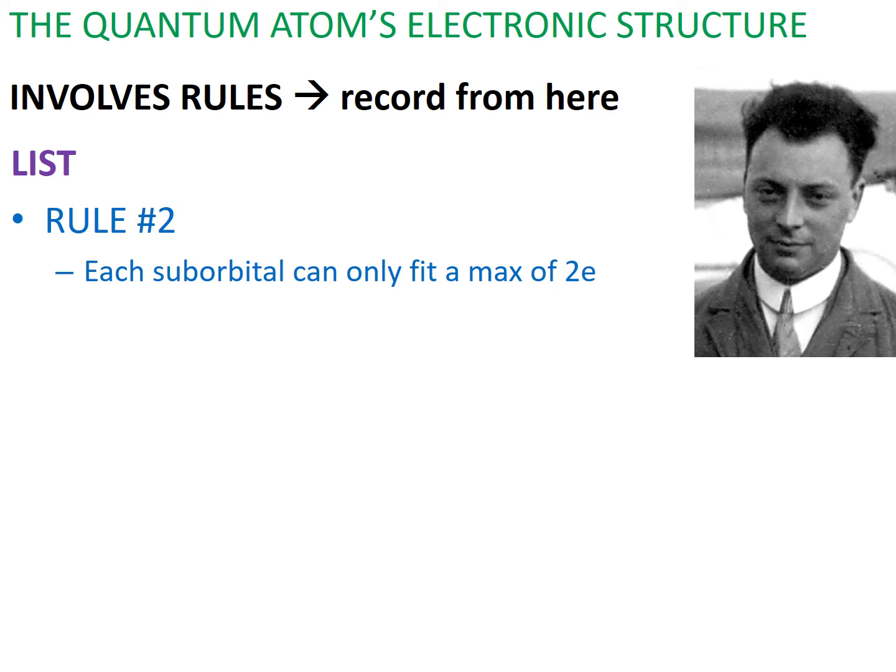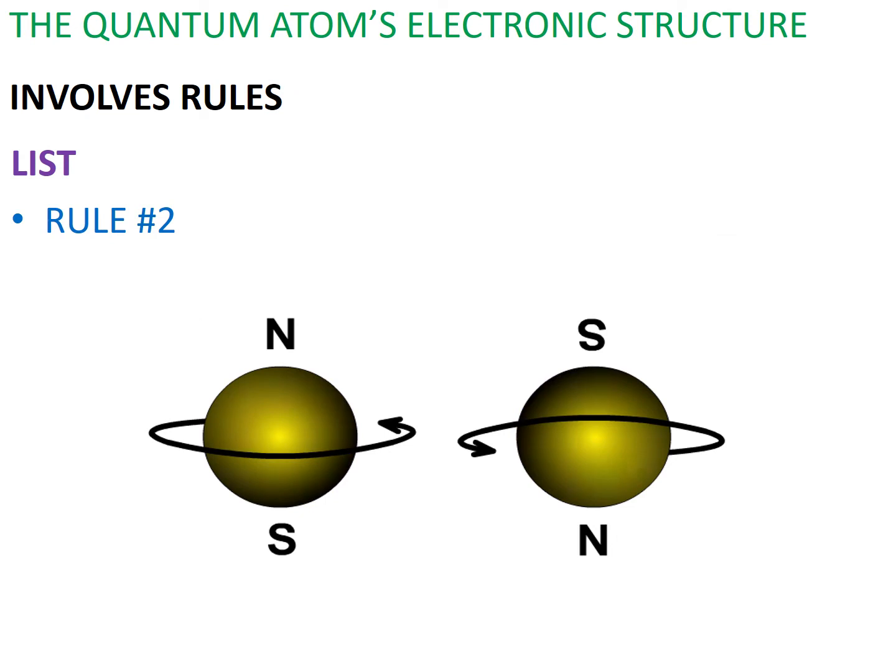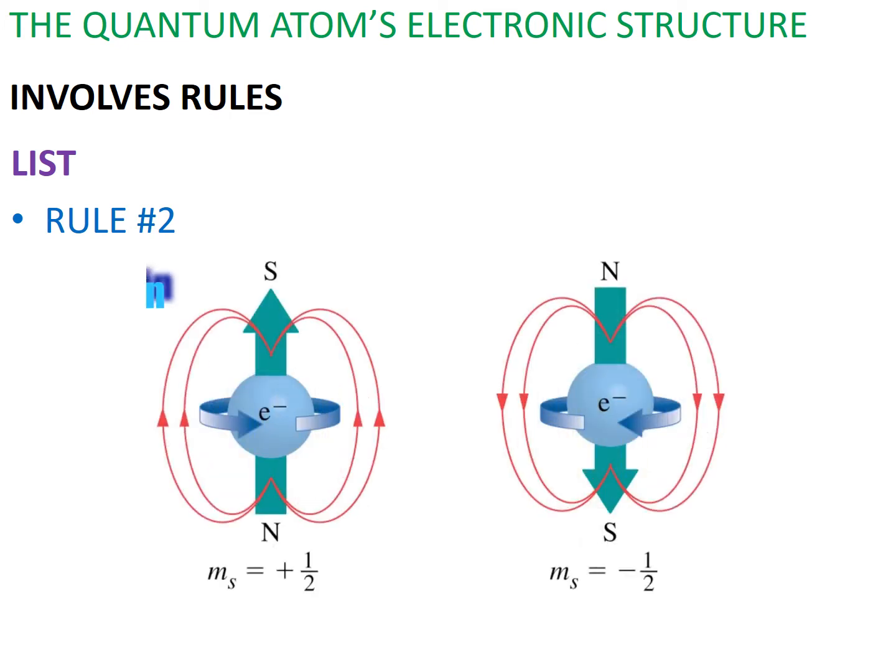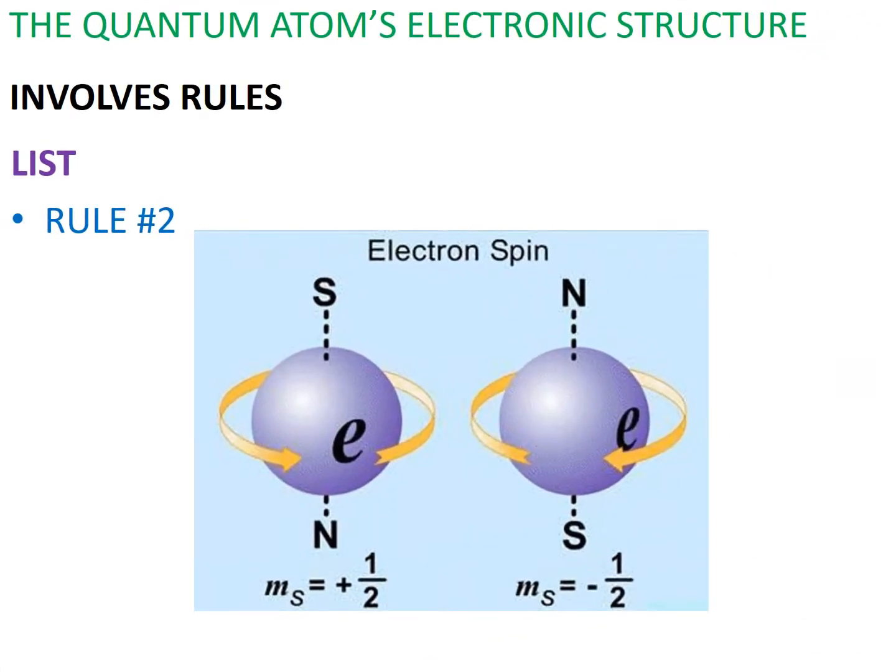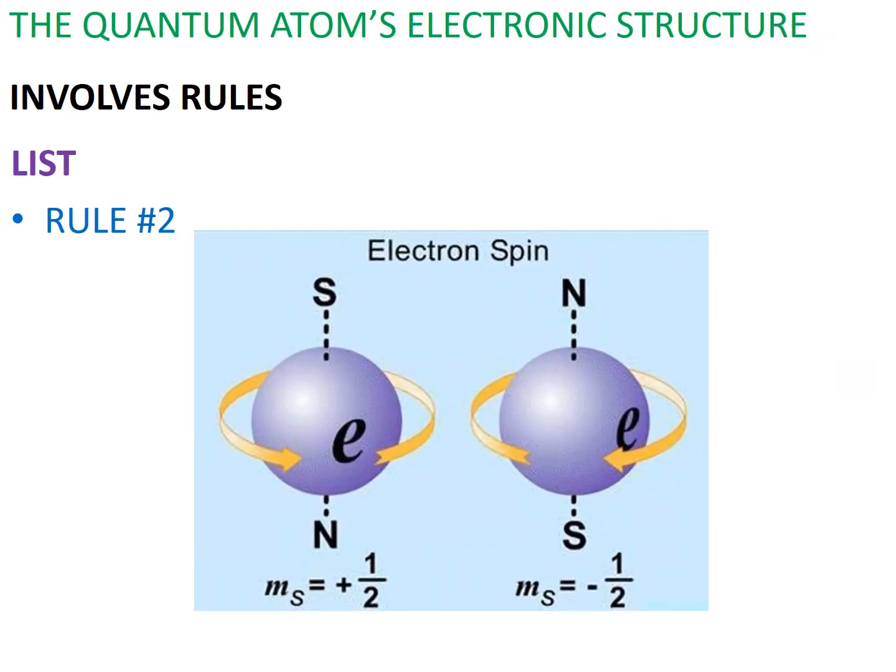The next rule is that each sub-orbital can only fit a maximum of 2 electrons at a time. This rule was made famous by Wolfgang Pauli alone. Believe it or not, electrons spin, and spinning, or moving charges, produce a magnetic field with a direction. Two electrons next to each other, spinning in opposite directions, will produce two magnetic fields that kind of attract, and thus minimize electrostatic and magnetic repulsion within the atom.